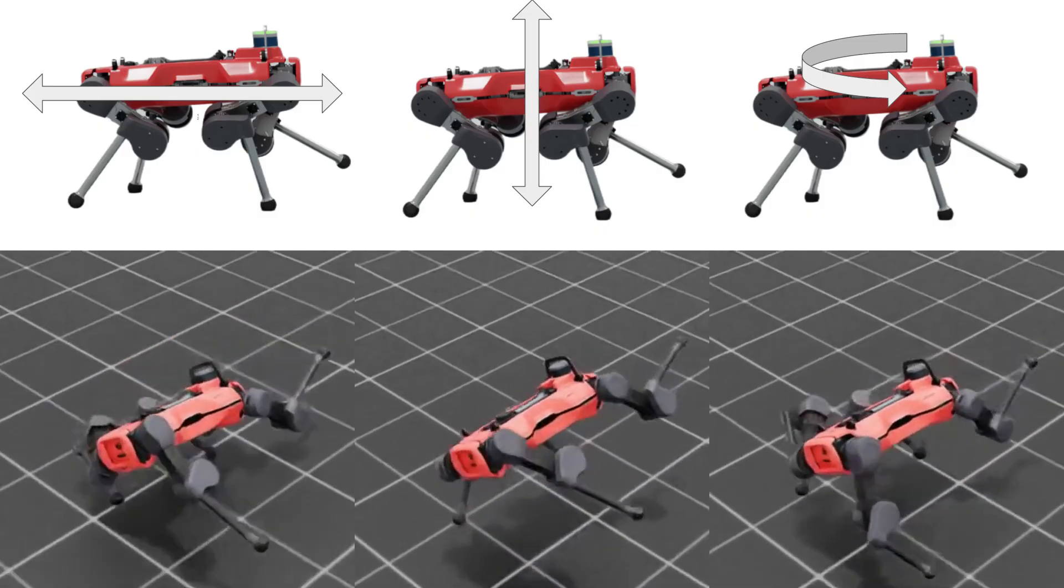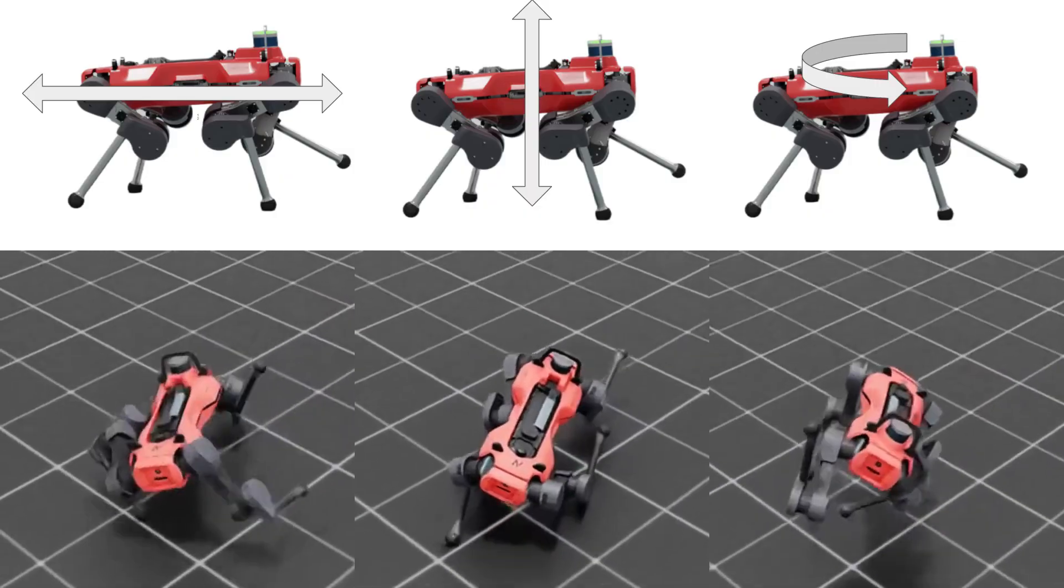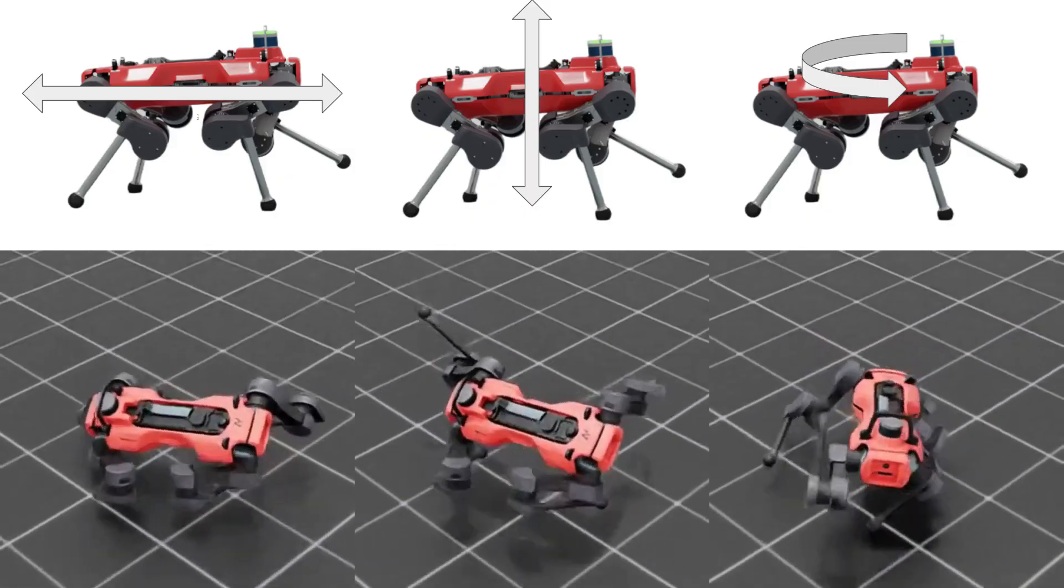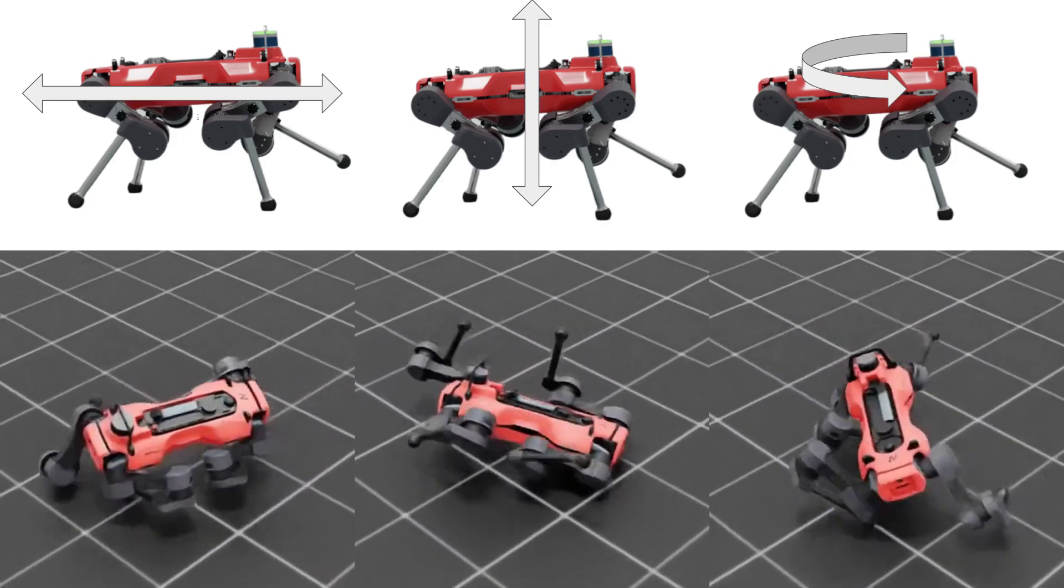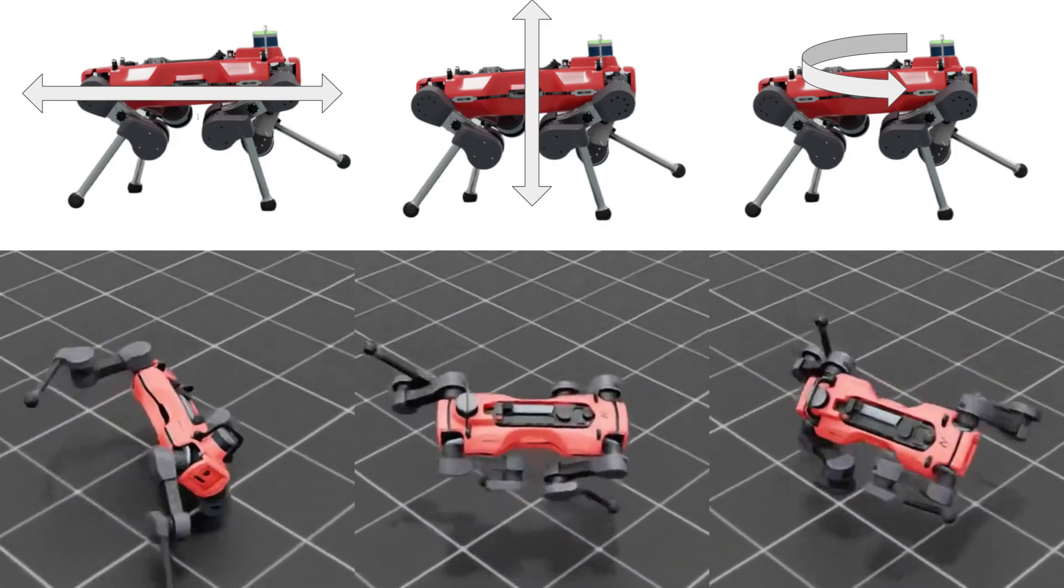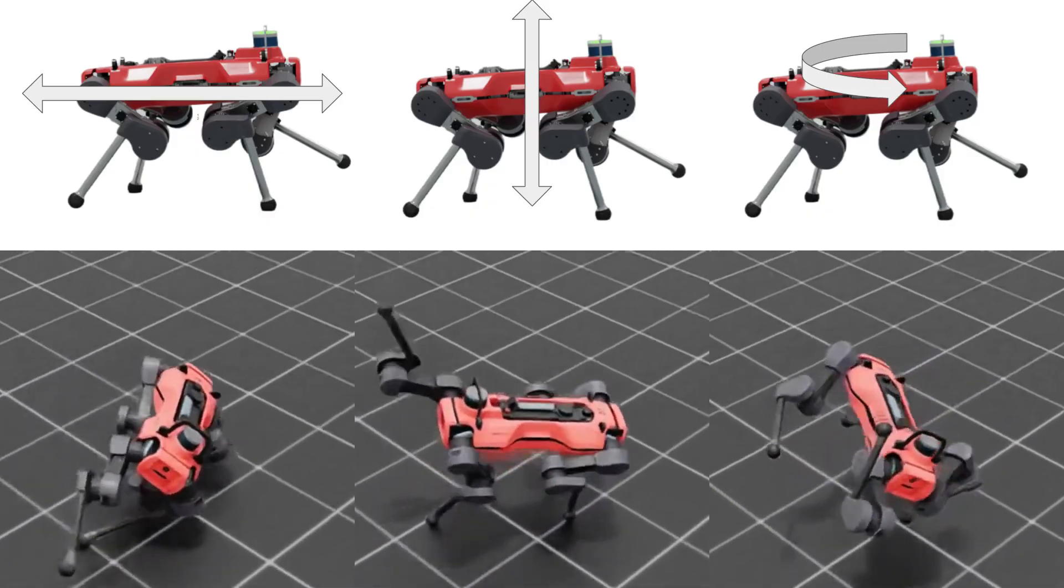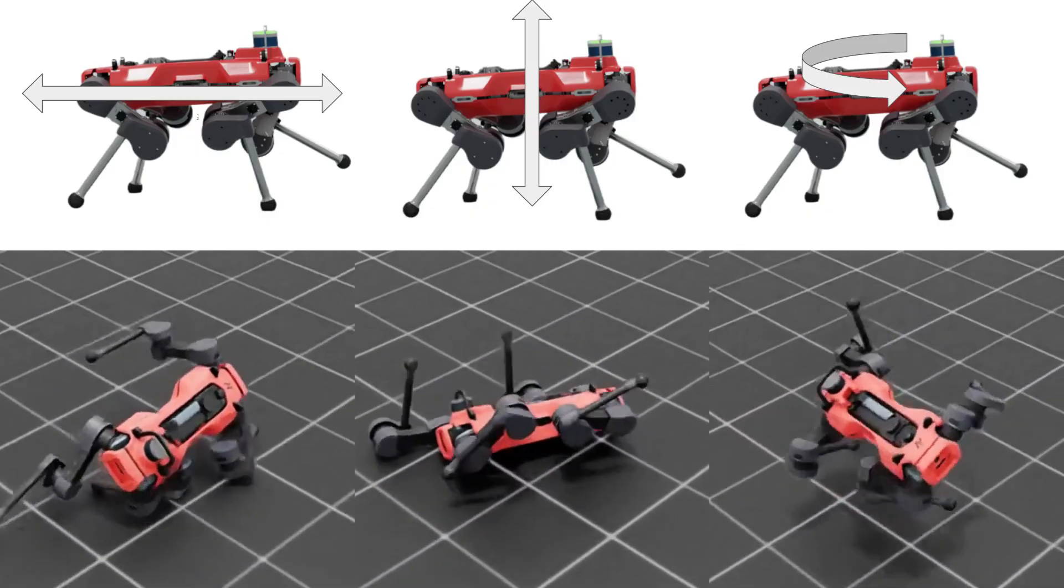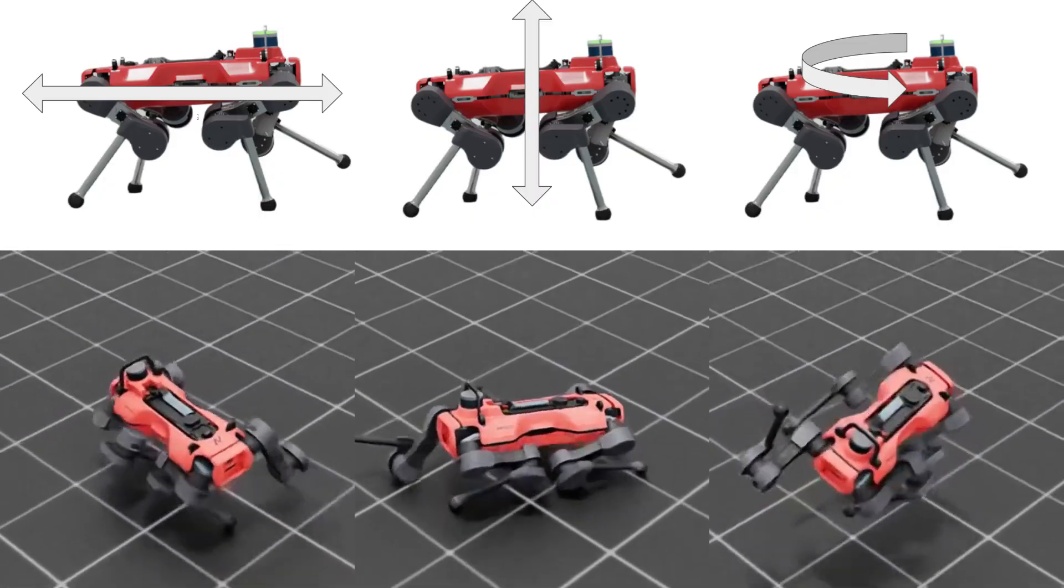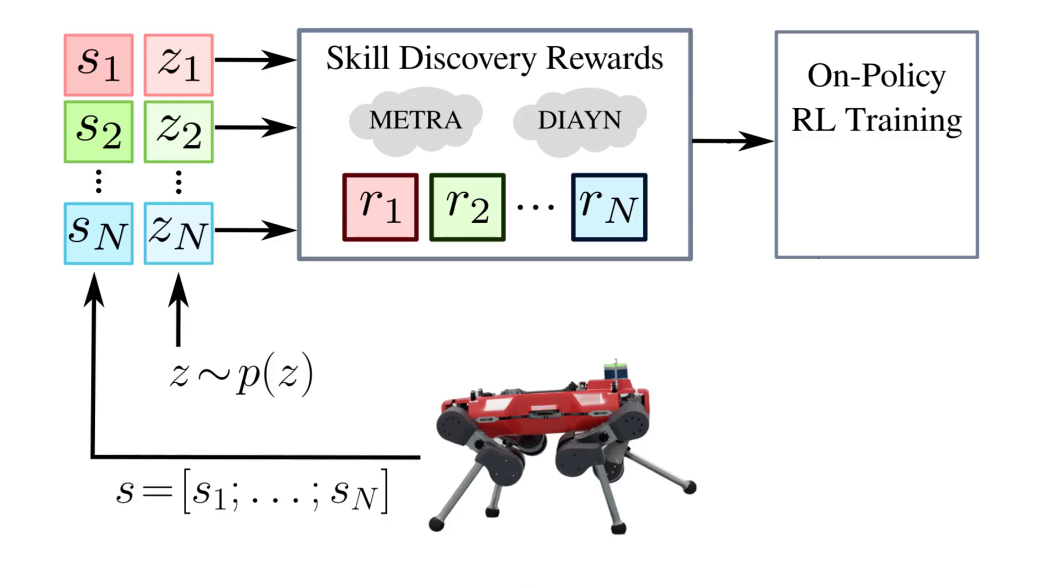However, this exclusive reliance on intrinsic rewards reveals a core limitation of traditional skill discovery. While they effectively encourage diversity, they provide no feedback on whether the learned behaviors are safe, robust, or physically feasible on real hardware. As a result, without additional guidance, the discovered skills are often overly aggressive or unsafe for real-world deployment.